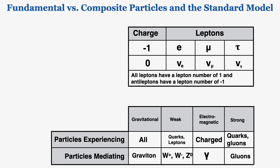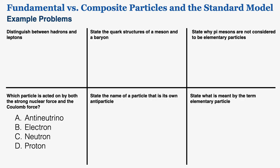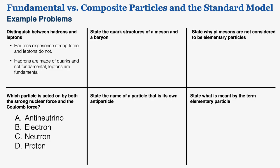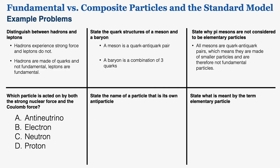Leptons and exchange particles will be covered further in future videos on conservation laws and Feynman diagrams. Here are more practice problems from actual IB tests. First: distinguish between hadrons and leptons — hadrons experience the strong force and are made of quarks, while leptons do not experience the strong force and are fundamental particles. Second: state the quark structures of a meson and a baryon — a meson is a quark-antiquark pair, and a baryon is a combination of three quarks. Third: why are pi mesons not elementary? Because all mesons are quark-antiquark pairs, meaning they are made of smaller particles.